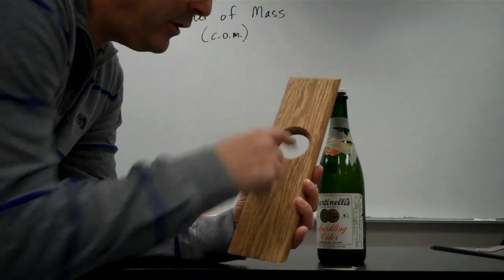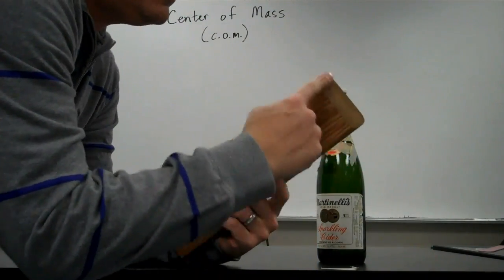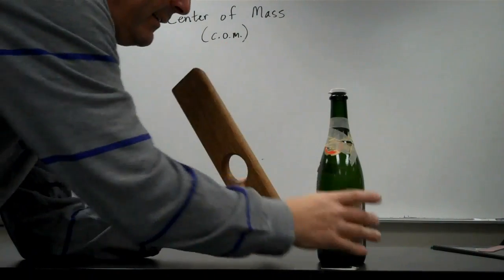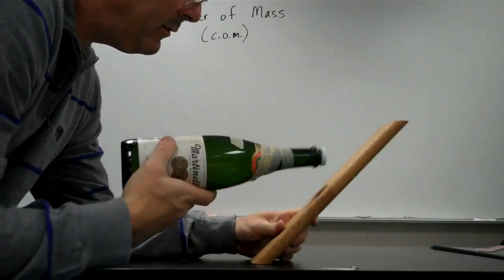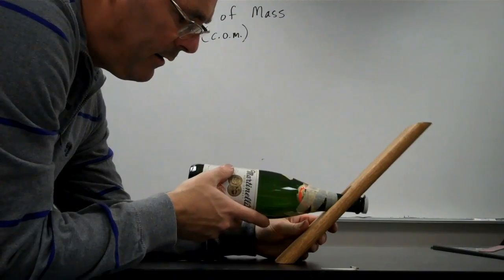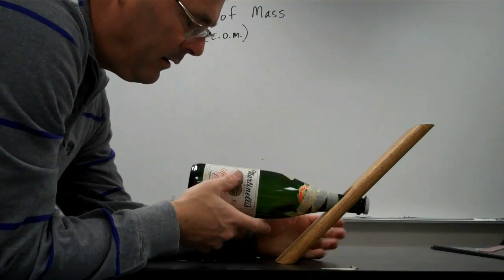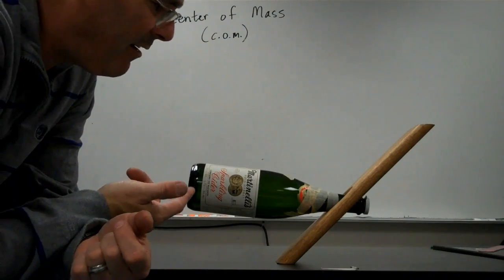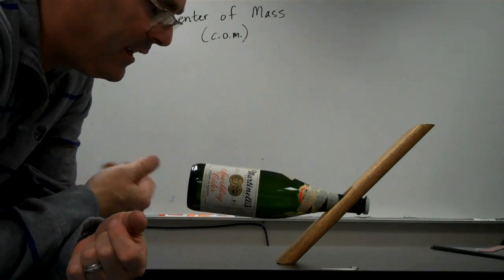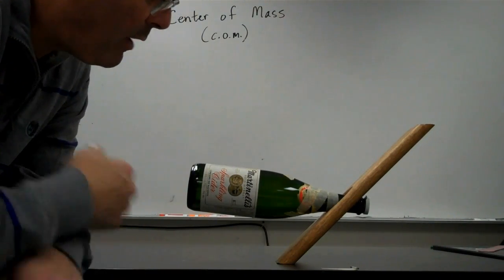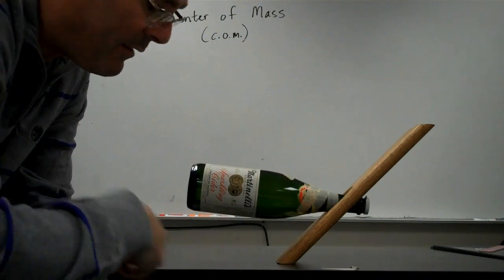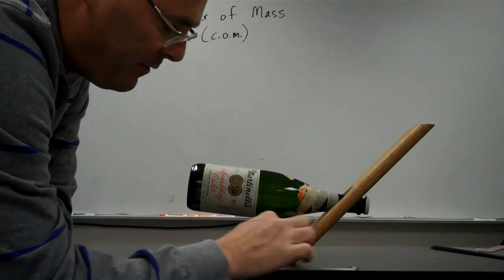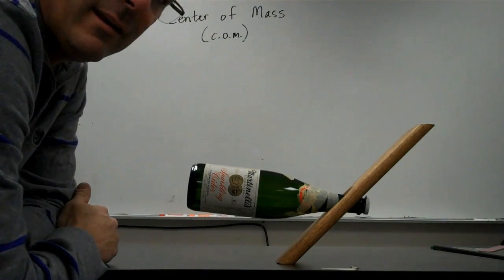Here's an interesting object. It's just a piece of wood with a hole in it and it's beveled to be flat on both ends at an angle. I can take my bottle, put it through there and it balances. What does this tell me about the center of mass of this system? I know that the center of mass of the wood and the bottle together must be directly vertically above this point of support, otherwise it would tip over.